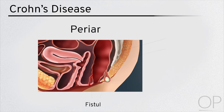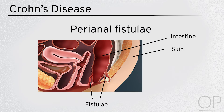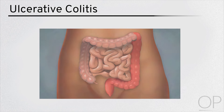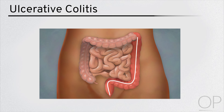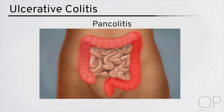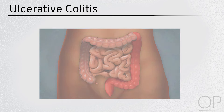Perianal fistula are the most common type of fistula seen in Crohn's disease and often present with perianal abscess. In ulcerative colitis, intestinal inflammation is limited to the colon. It extends in a continuous fashion rather than in a patchy distribution. It can affect the entire colon, termed pancolitis, or part of it, but it is typically most severe in the rectum.